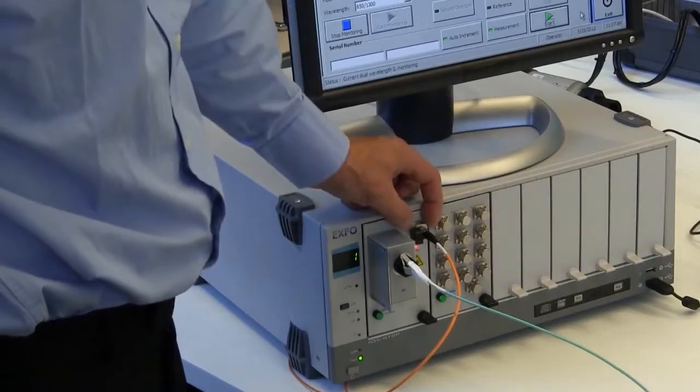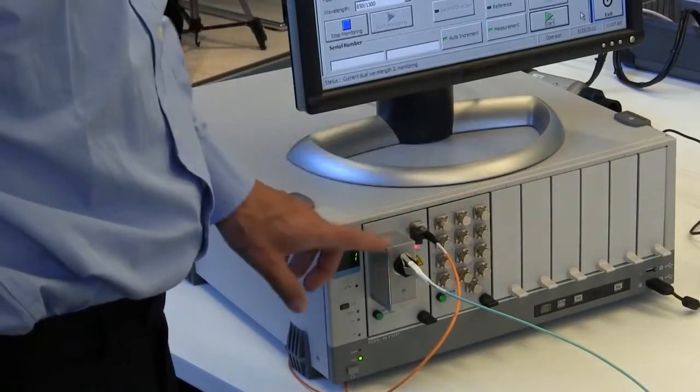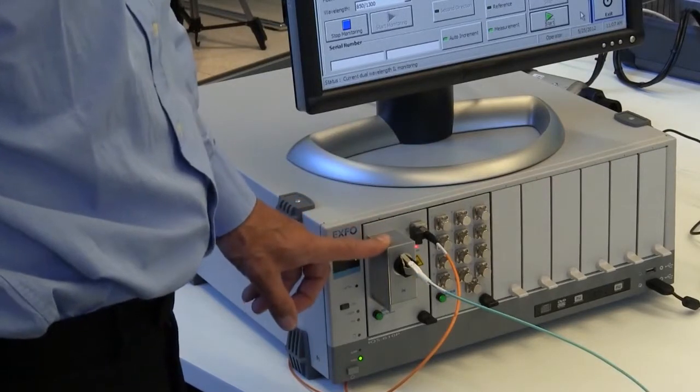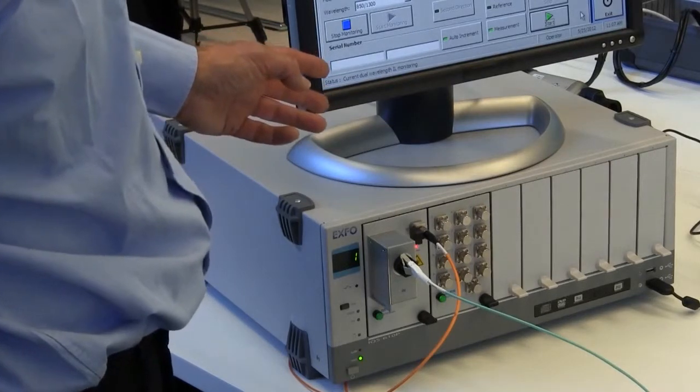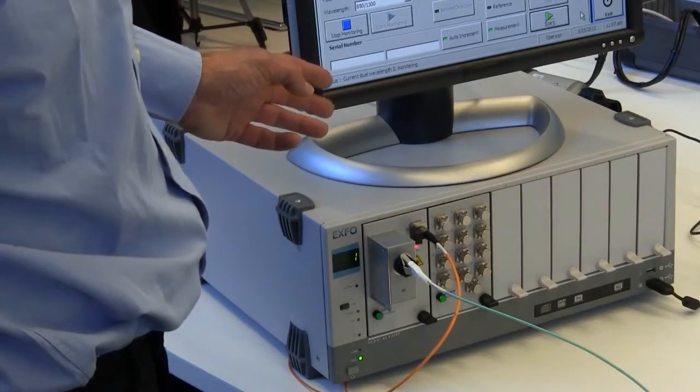The first demonstration is to show the insertion loss increase due to small bending radius for the two different patch cords. The test equipment includes a light source, an integrating cavity detector to be sure we capture all the light, and a monitor to visualize the insertion loss increase.